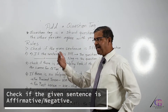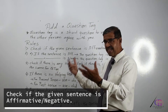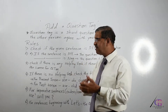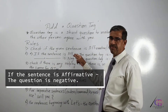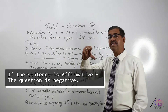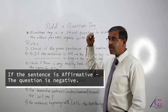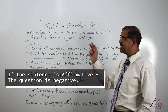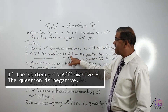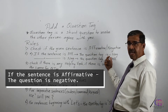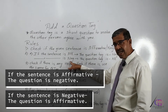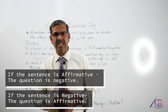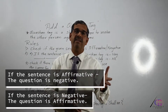Rule 2 has two parts — 2a and 2b. If the given sentence is affirmative, the question tag we add must be negative. It is exactly the opposite: all affirmative sentences always have a negative question tag, whereas all negative sentences have an affirmative question tag. For example, 'She is a very lazy girl' — the question tag will be 'isn't she?' because the sentence is affirmative.